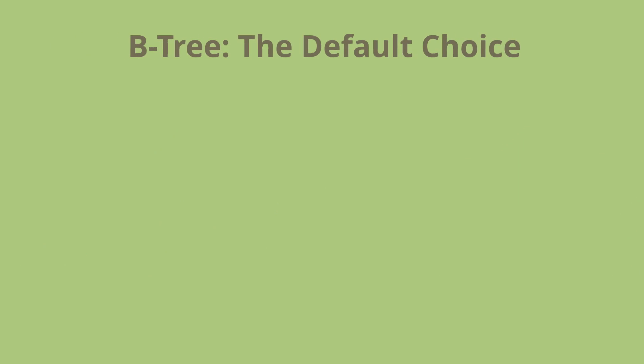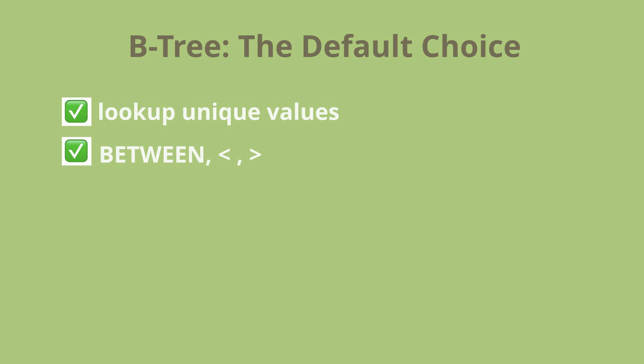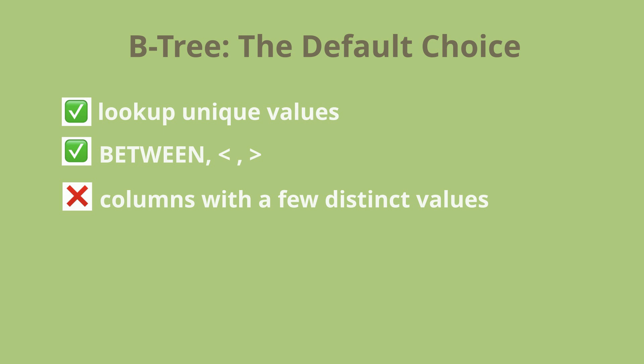Btree indexes are best suited for situations where you need to perform quick lookups on unique values. They work especially well for primary keys, indexed columns used in certain operations, and range queries using operators like between, less than, or greater than. Btree indexes are not the best choice when dealing with columns that only have a few distinct values – for instance, if a column contains just true or false, indexing it with Btree won't provide much benefit, since scanning the table directly might be just as fast.